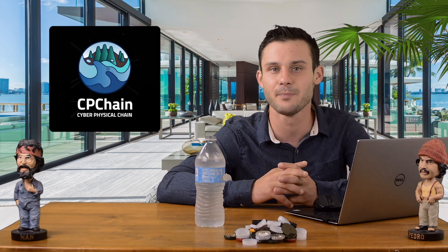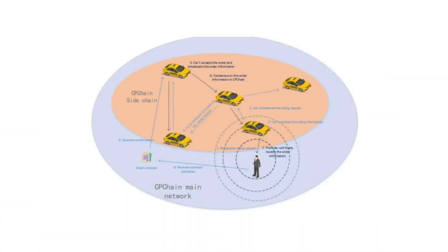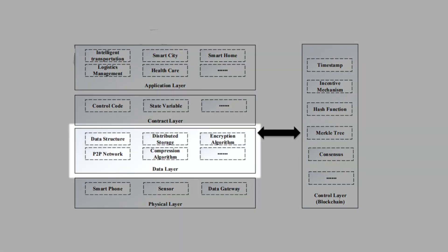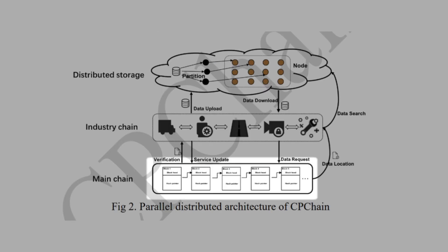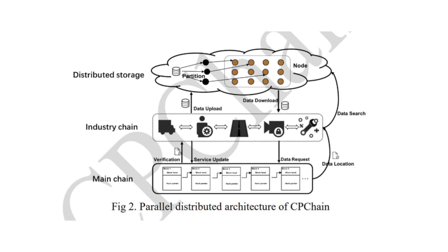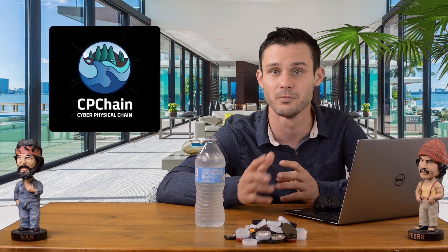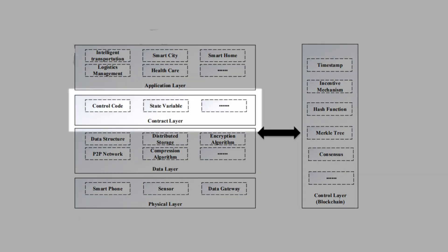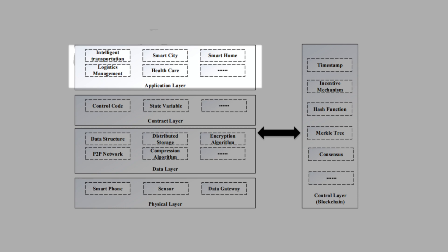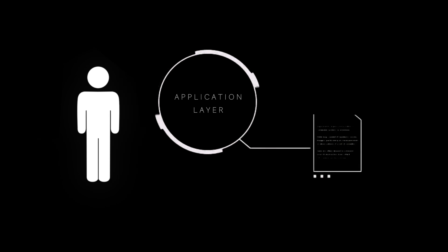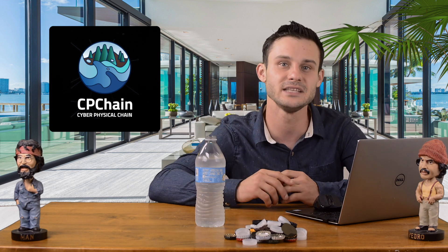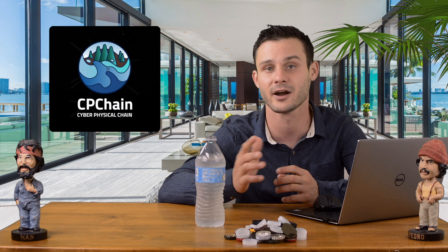The physical layer is the basis for data acquisition, and includes smartphones, sensors, data gateways, and others. The data layer's function is the processing of the mainchain data, designing different data structures and compression algorithms for varying applications, and allowing original data to be stored off the blockchain. The contract layer is the core of the system function, where intelligent contracts will interact with the blockchain and the application layer. The application layer is the interface between the user and the contracts, and can be developed to different requirements. The blockchain is used as a vertical control layer to supervise data interaction between the hierarchy of layers.